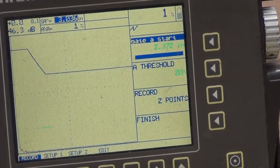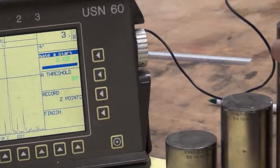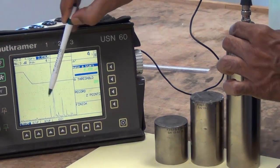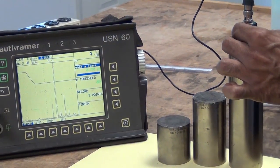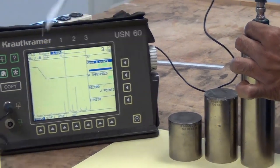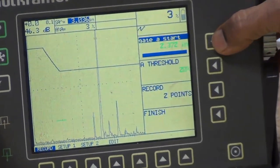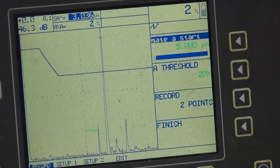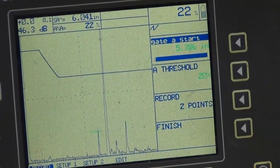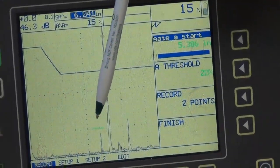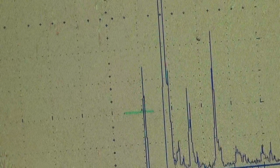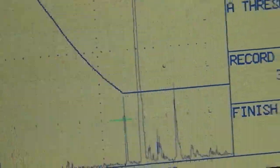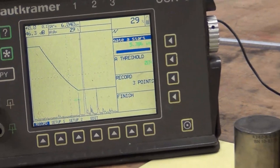Then I go to the third point. That signal is right there. Again, I move the gate on top of the signal. That's the third signal, and I record it.